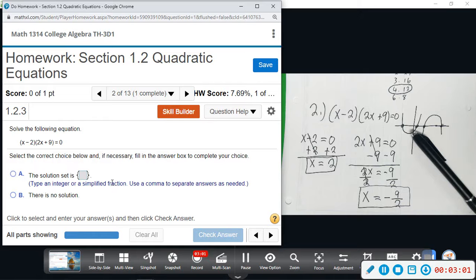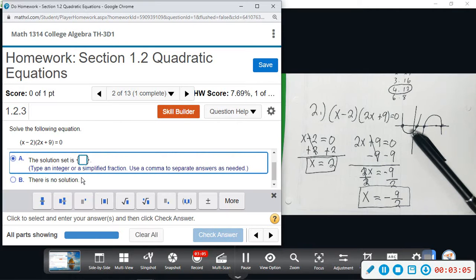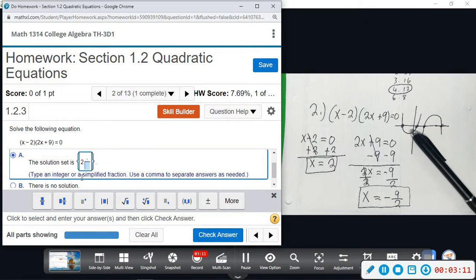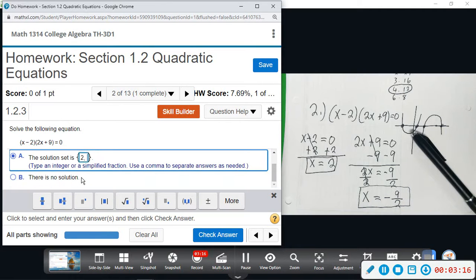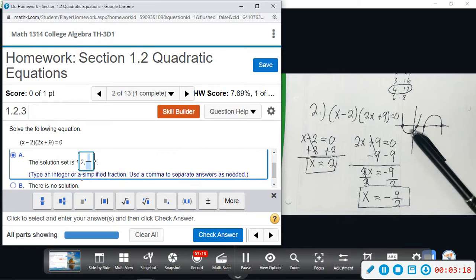So our two solutions are positive 2 and negative 9 divided by 2. So you type integer or simplify a fraction—it tells you how you want to enter—and then use a comma to separate your answers. If you miss either one of those, it will count it incorrect. 2, comma, and then I'm going to do a division bar. It's not doing it the way I want it to. 2, comma, space, division bar, there we go.